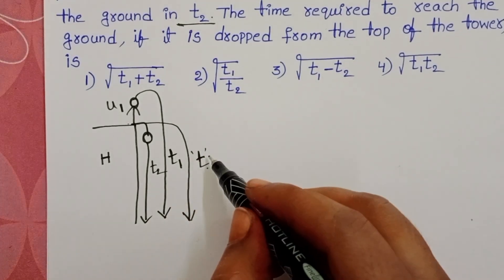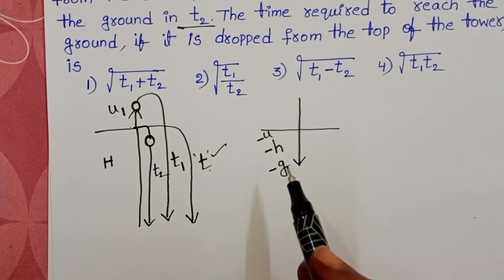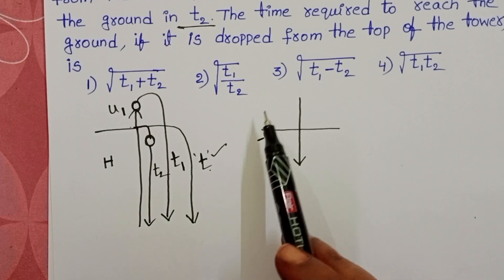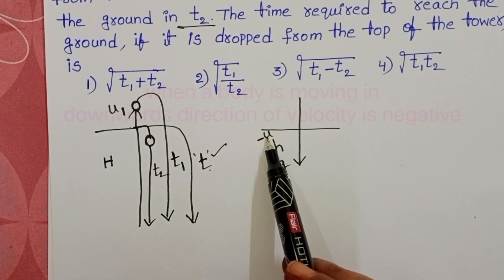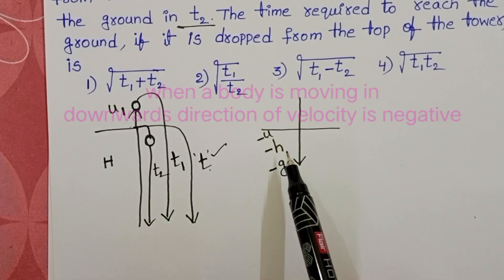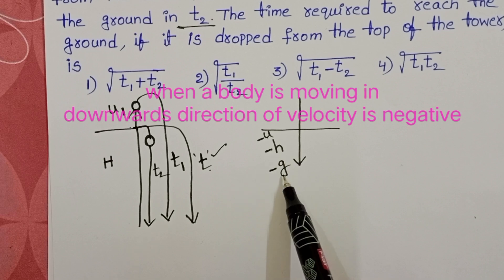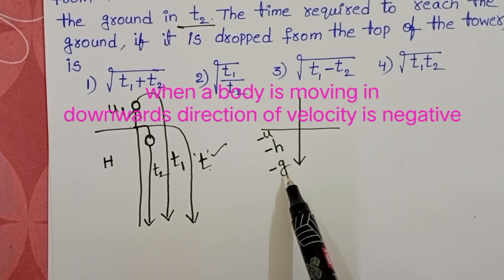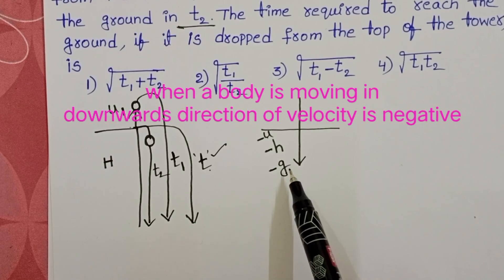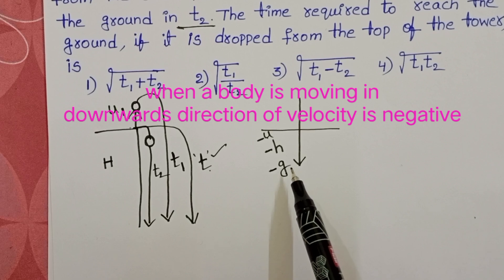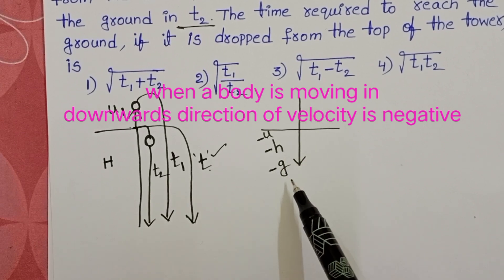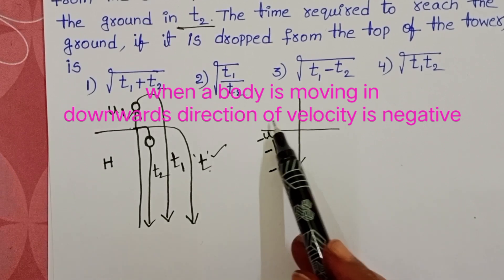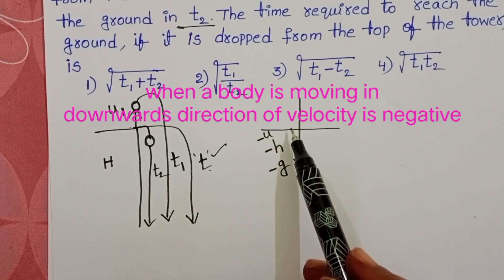Take the sign conventions: if any body is moving in the downward direction, speed is negative, height is negative, and acceleration due to gravity is also negative. Remember this — acceleration due to gravity is always negative, whether the body is moving upward or downward. These are the sign conventions here.